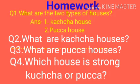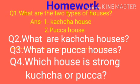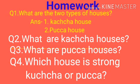Homework for you: write in CW book, page number 36. Question one: What are the two types of houses? Answer: kaccha house and pakka house. Question two: What are kaccha houses? Answer: Most people live in huts which are made up of mud, straw, and bamboo - these are called kaccha houses. Question three: What are pakka houses? Answer: People in towns and cities live in houses made up of cement, brick, stone, steel, and iron - these are called pakka houses.